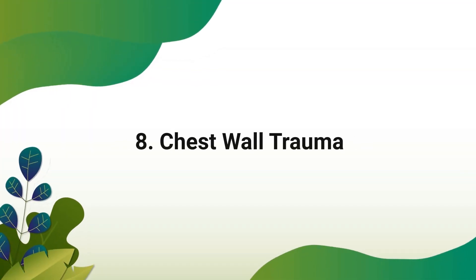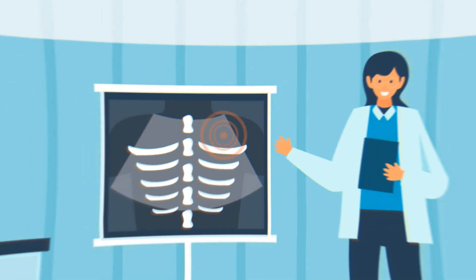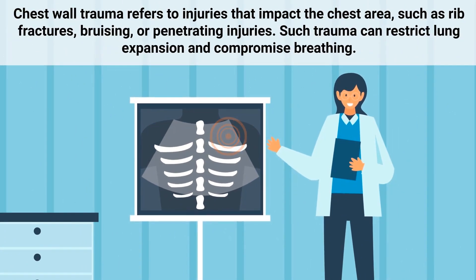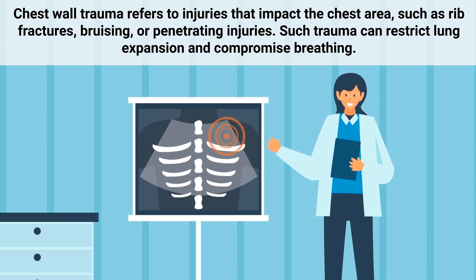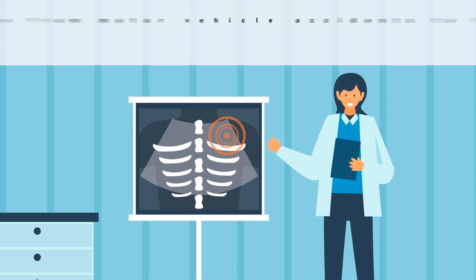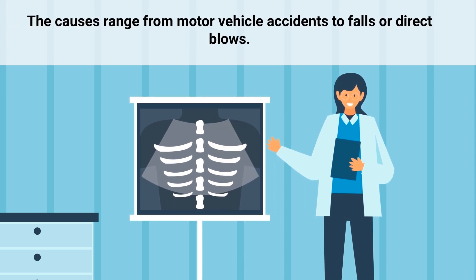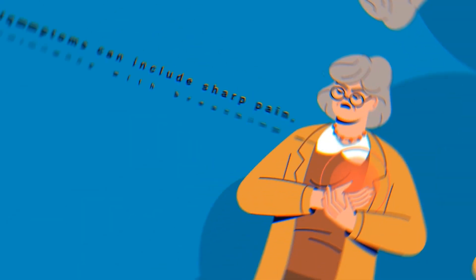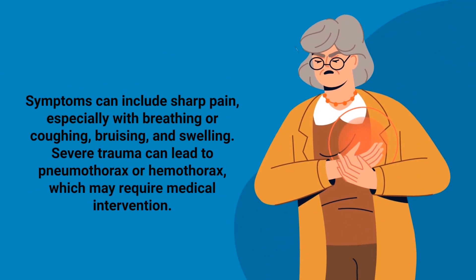Chest wall trauma refers to injuries that impact the chest area, such as rib fractures, bruising, or penetrating injuries. Such trauma can restrict lung expansion and compromise breathing. The causes range from motor vehicle accidents to falls or direct blows. Symptoms can include sharp pain especially with breathing or coughing, bruising, and swelling. Severe trauma can lead to pneumothorax or hemothorax, which may require medical intervention.